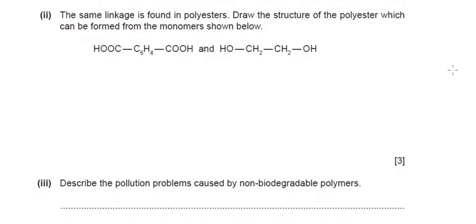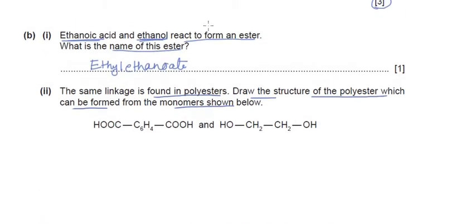The next sub-question says the same linkage is found in polyesters. Draw the structure of the polyester which can be made from the monomers shown below. As we saw with the ester, a polyester is also formed from carboxylic groups and alcohol groups, removing water to form the polymer.